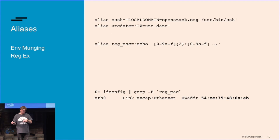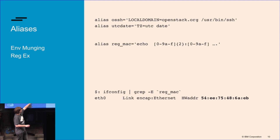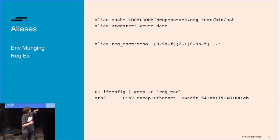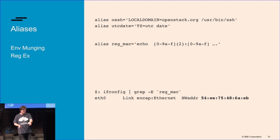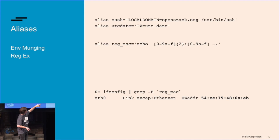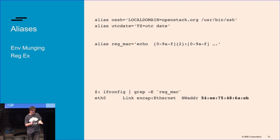You can put environment variables inside aliases and make new commands that way. You can see an example of utc-date by just setting the TZ variable. Typically 'openstack.org' is not in my DNS search scope, but when I type 'ossh server' it will go to server.openstack.org. This is a little bit experimental, but you can put regexes basically in aliases and then kind of grep for something that looks like a MAC address — that's pretty cool.